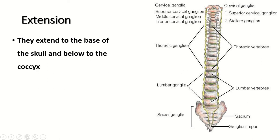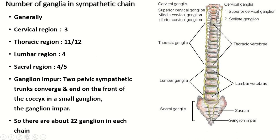The sympathetic chain extends from the base of the skull to the coccyx. The number of ganglia in each sympathetic chain: in the cervical region usually three, in the thoracic region 11 to 12, in the lumbar region four, in the sacral region four or five, and the last one is the ganglion impar — so about 22 ganglia are present in each chain.